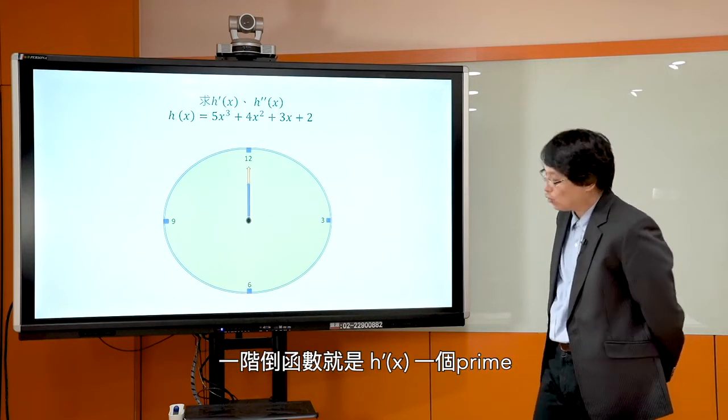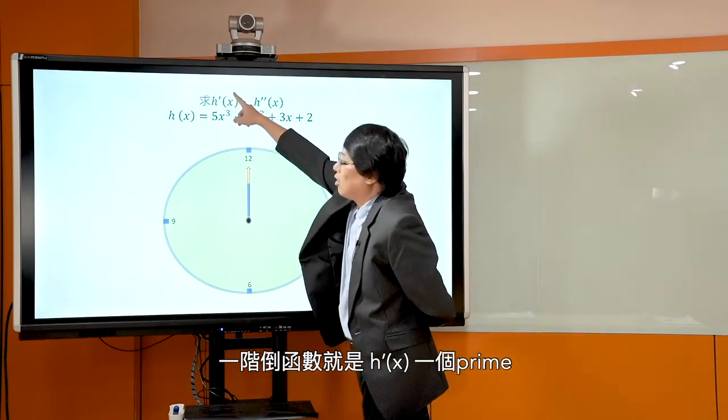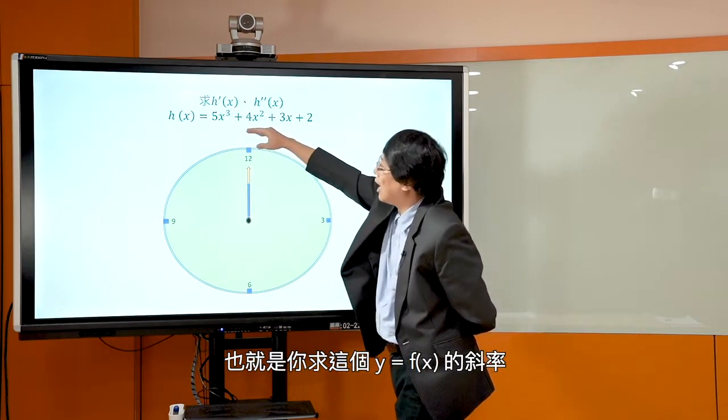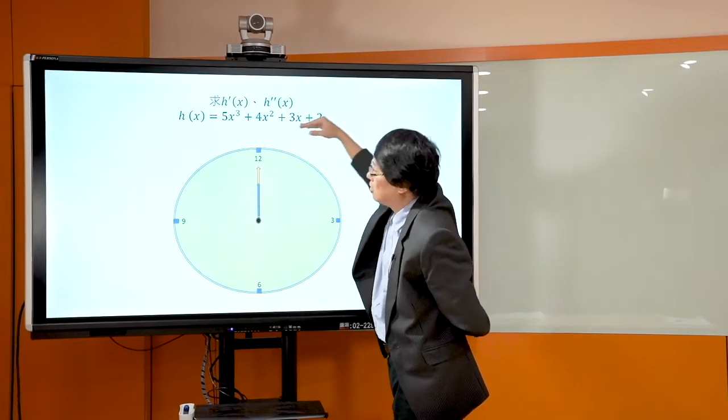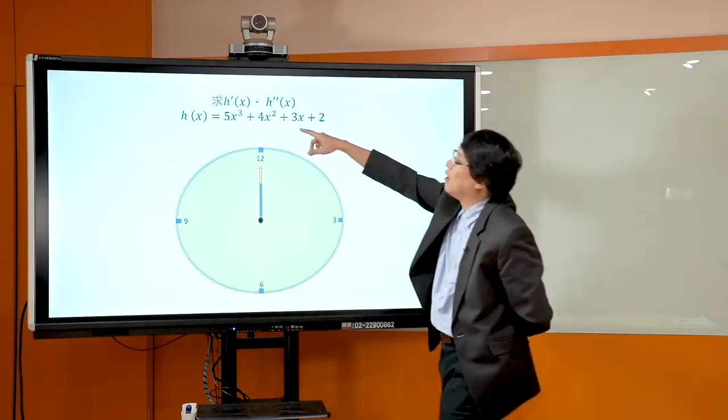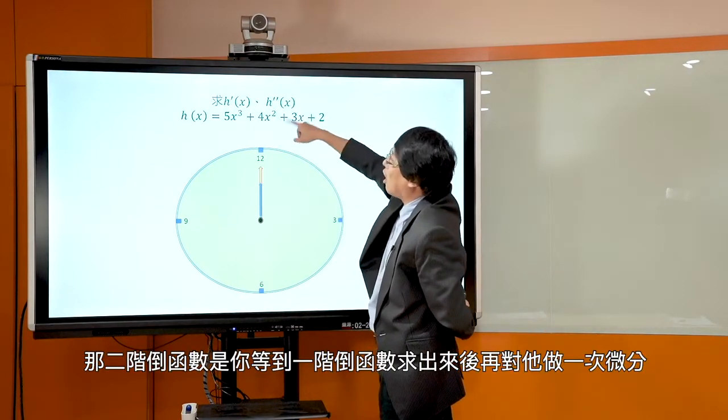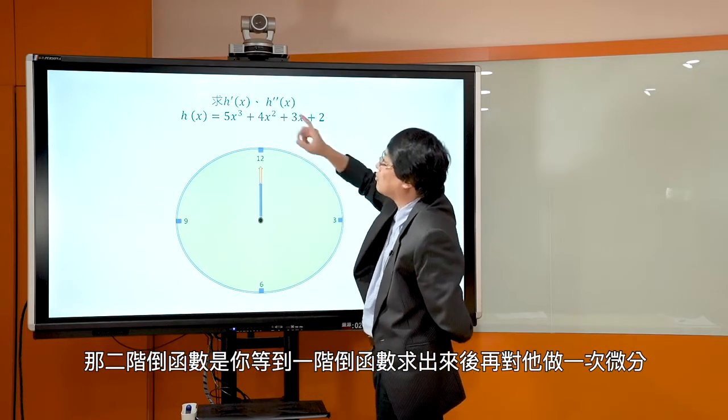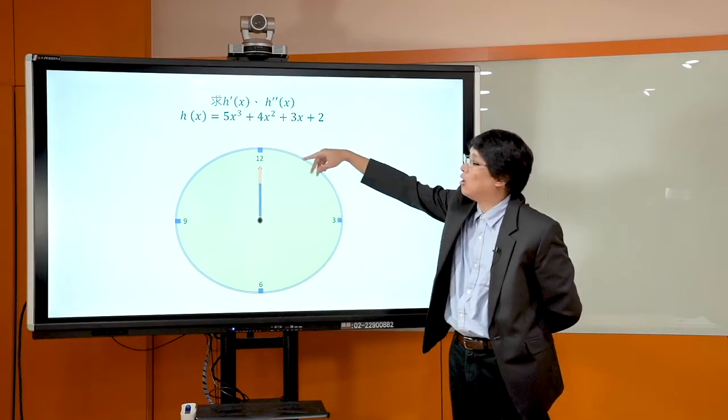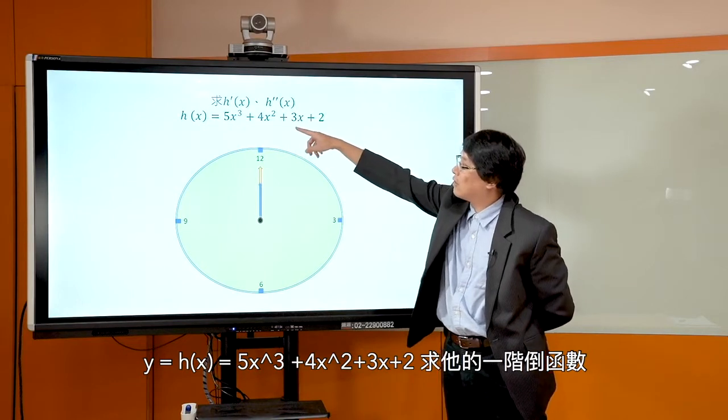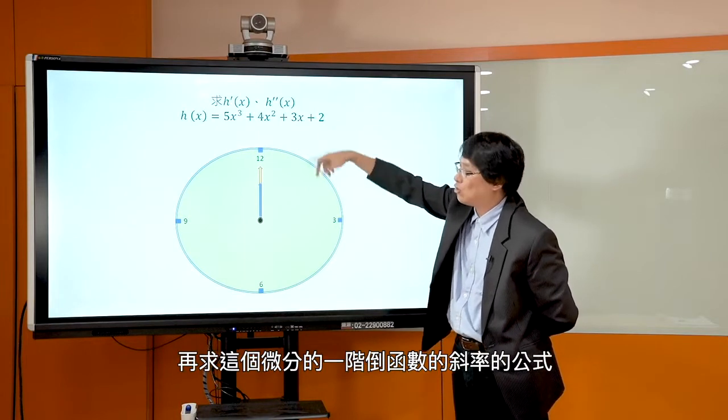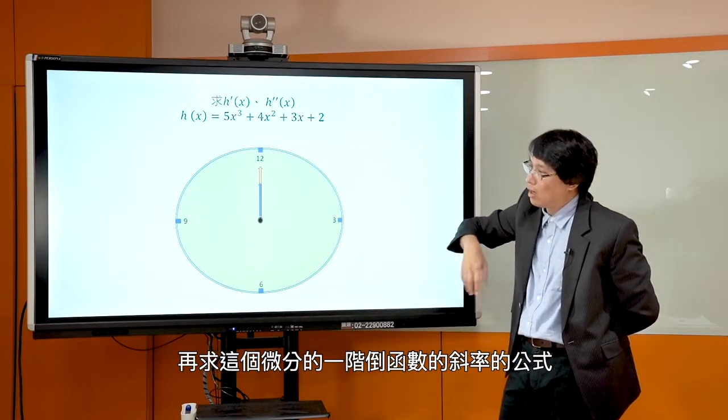希望大家能够透过这个练习题把上一讲我们讲的几个微分的公式把它熟练起来。第一题我们来看到，如果有一个函数 Y = H(x) = 5x³ + 4x² + 3x + 2，请大家来求它的一阶导函数还有二阶导函数。一阶导函数就是这个 H'(x)，也就是说你求这个函数的斜率公式。二阶导函数是等到一阶导函数求出来以后，再对它做一次微分。